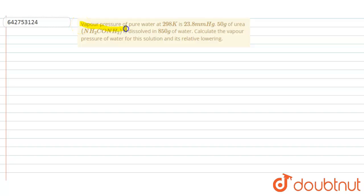vapor pressure of pure water at 298 kelvin is 23.8 mm Hg and 50 gram of urea is dissolved in 850 gram of water. Calculate the vapor pressure of water for the solution and its relative lowering.